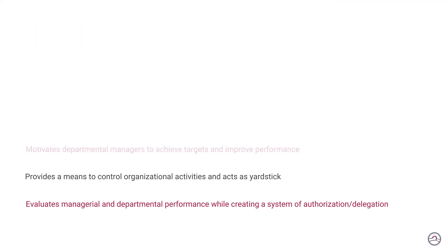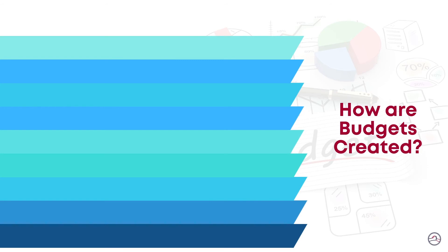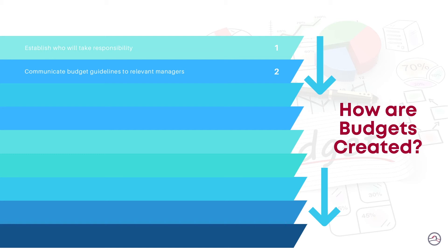Effective budgeting requires a sound organizational structure, thorough research and analysis, and approval at all levels of management. Now let's look at how to create meaningful budgets. The first step in the budgeting process is to determine who will be responsible for the creation of budgets. After establishing responsibility, strategic objectives, goals, historical performance, trends, and forecasts should be communicated to those who are responsible. Once budget guidelines are communicated to the relevant managers, they identify the limiting factors — this is most often money. After identifying limiting factors, managers typically prepare the budgets, which is followed by budgets for other areas such as operating and capital expenses. The key to a successful budgeting process is coordination and making sure that everything is consistent and complementary.